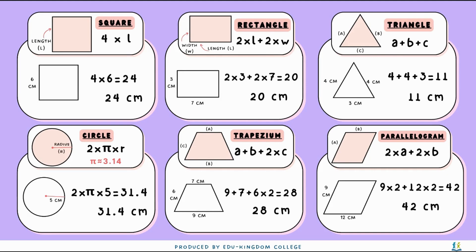Whereas for the parallelogram, the 12 and the opposite sides are going to be the same length. So we have 9 times 2 plus 12 times 2, which gives us 42 centimeters.